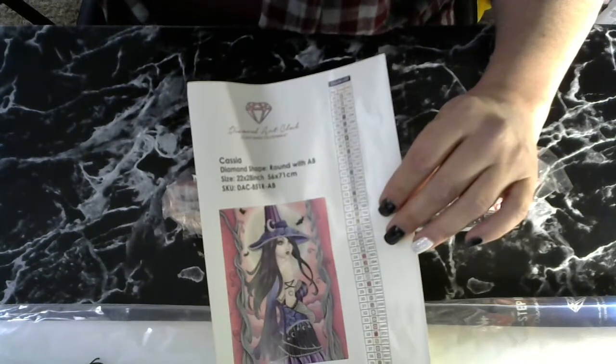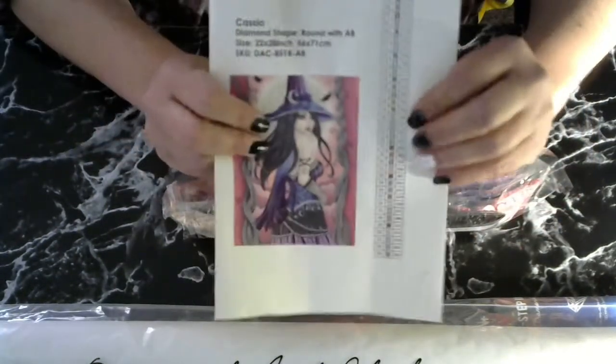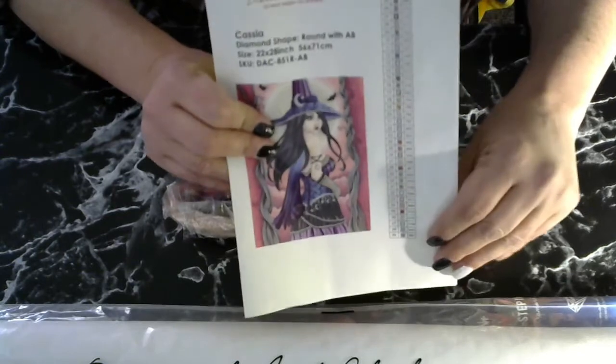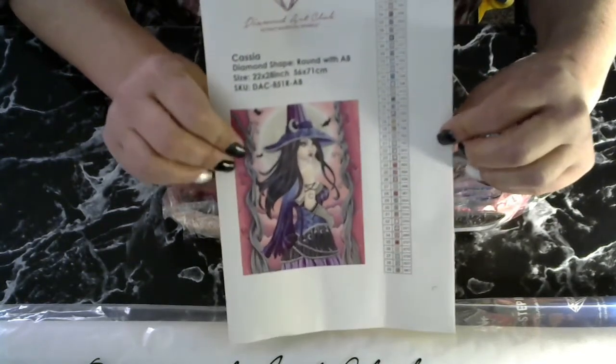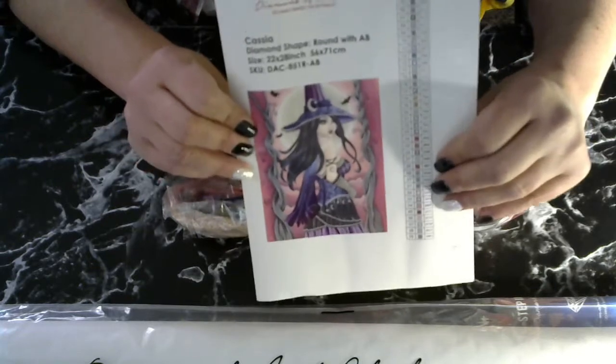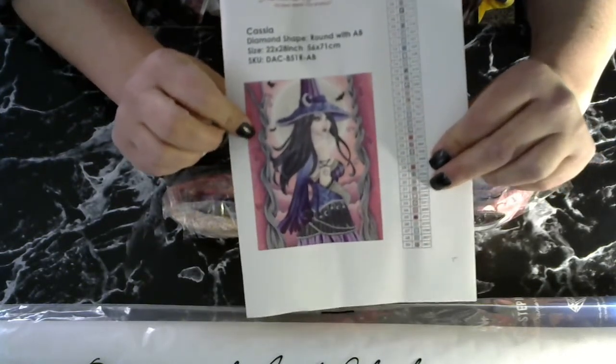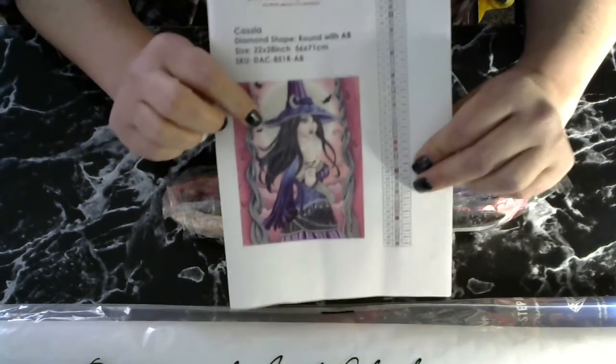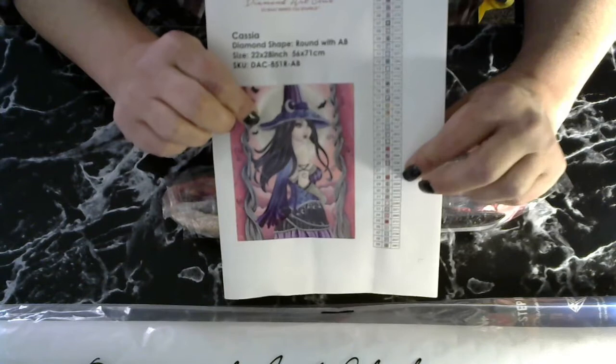All right, let's see if you can see it better on the sticker. I apologize for this, I'm still getting used to recording. So Cassia, as seen on there, it's round with AB, it's 56 by 71. The artist is Nikki Burnett. I'm sure many of you have already seen this unboxing done a couple times and have also seen this particular picture in her coloring book.